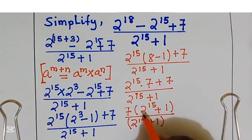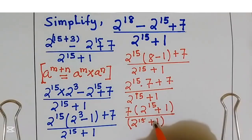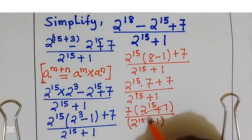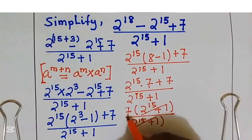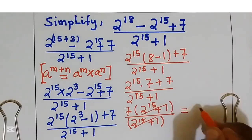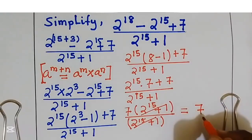Now I can simplify 2 power 15 plus 1 and 2 power 15 plus 1. We remain with 7. Our simplified answer is equal to 7.